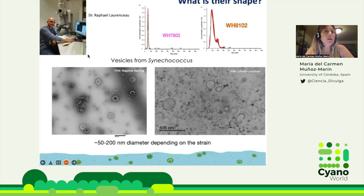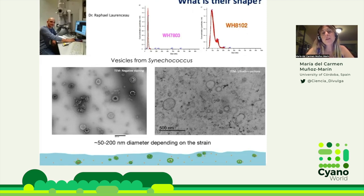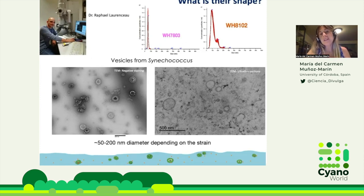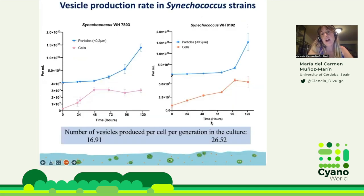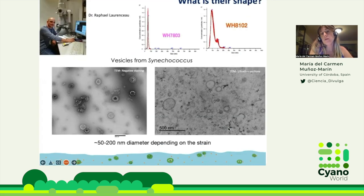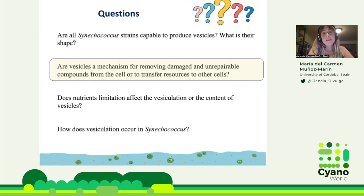With the help of Dr. Rafael Lorenzo, who was a postdoc at MIT, we observed these vesicles under TEM. Vesicles from Synechococcus measured between 50 to 200 nanometers in diameter depending on the strain. This is the negative staining; we also concentrated vesicles and cut ultrathin sections. Results from the Nanosight system show WH7823 measured around 50 nanometers, while 8102 had larger vesicles. So 8102 produced higher concentration and bigger vesicles.